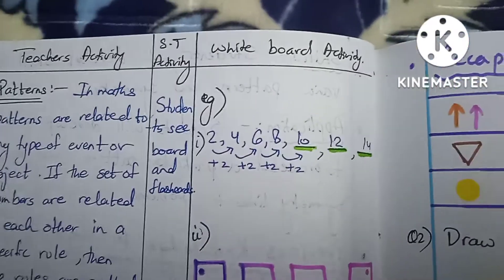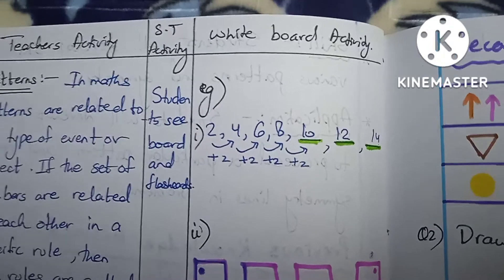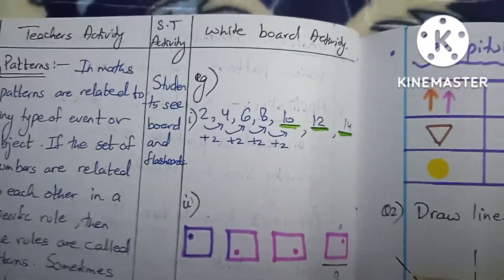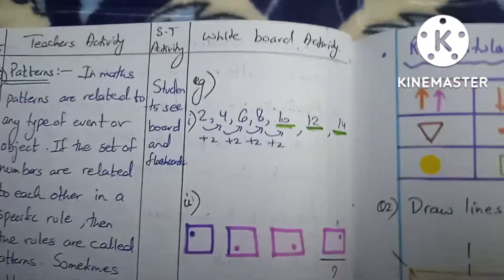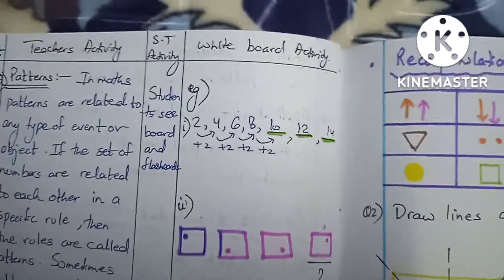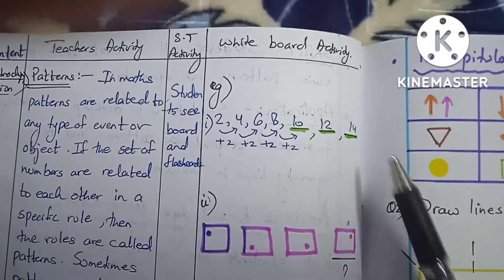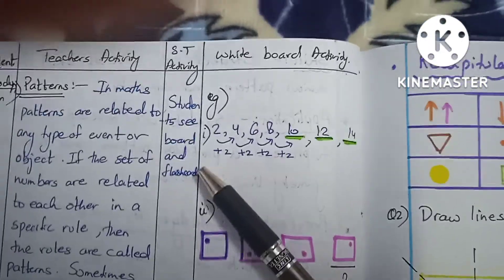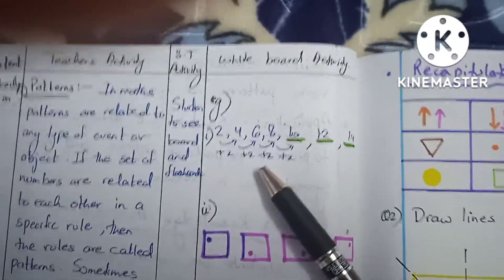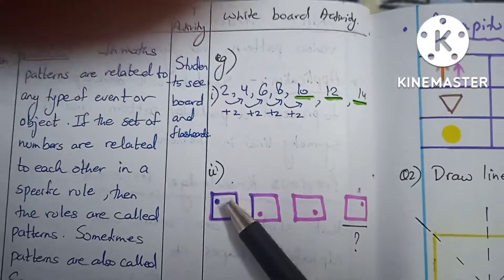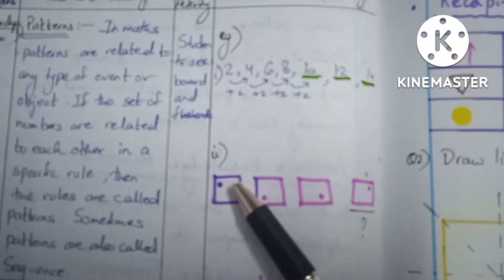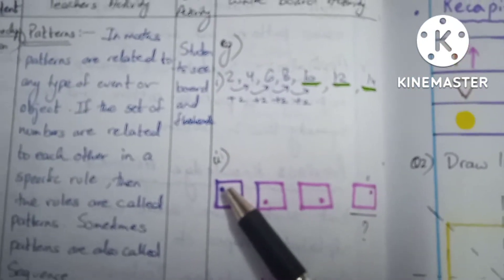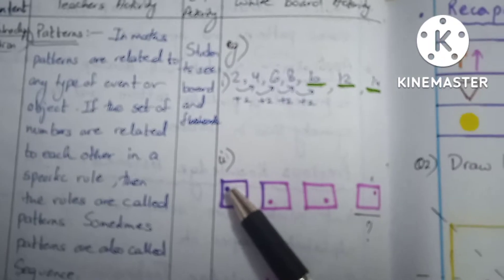For example, these numbers: 2, 6, 4, 6, 8, 10, 12 — you see these are increasing by plus 2. Similarly, we have a pattern of shapes: here we have a rectangular shape and basically a dot which is moving anti-clockwise, so this is a specific pattern.